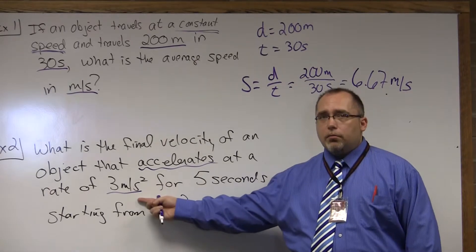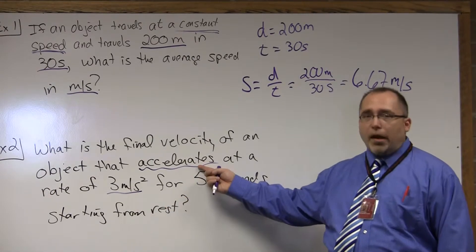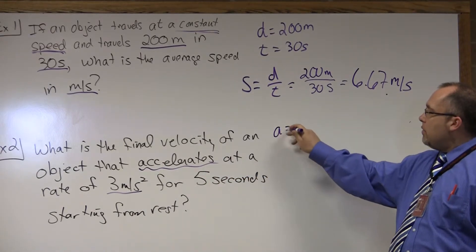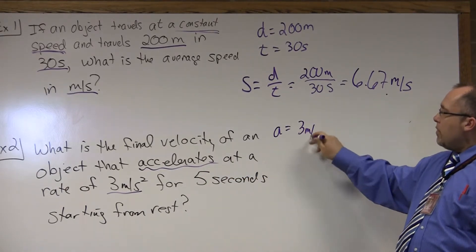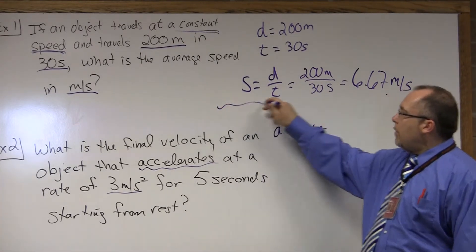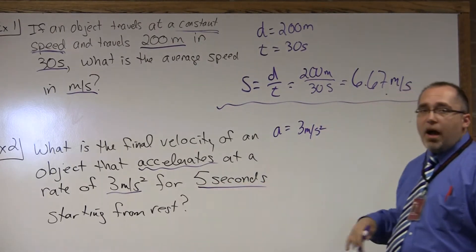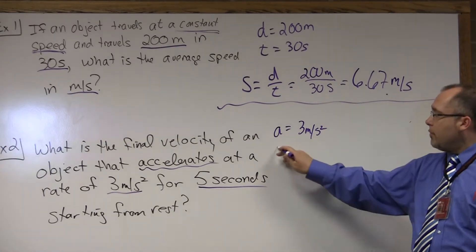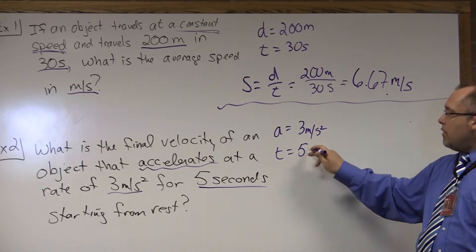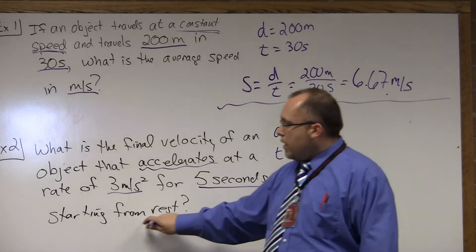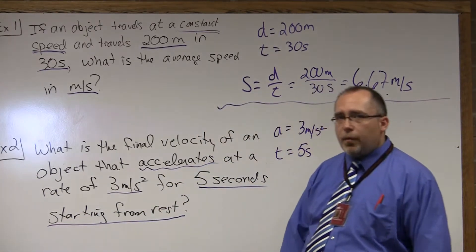One is the unit, meters per second squared. The second is the fact that I tell you it's accelerated. So, we have A is equal to 3 meters per second squared. For 5 seconds. 5 seconds is a time. So, we have a time of 5 seconds.